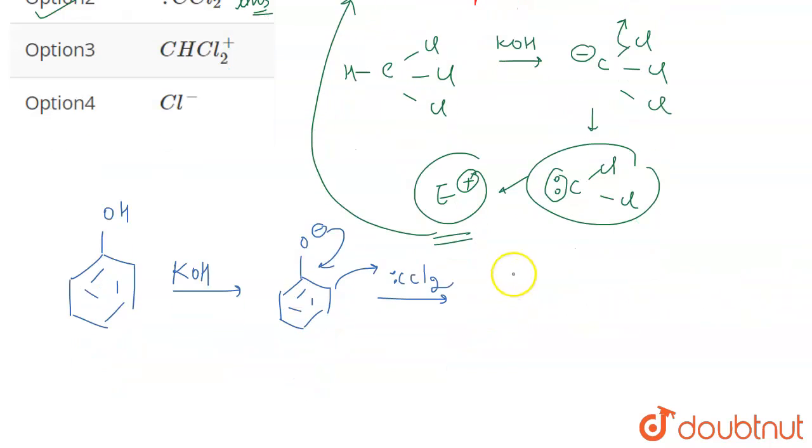Then what do we get? We get a double bond here, a double bond here, and double bond O. Then here we have Cl, Cl.